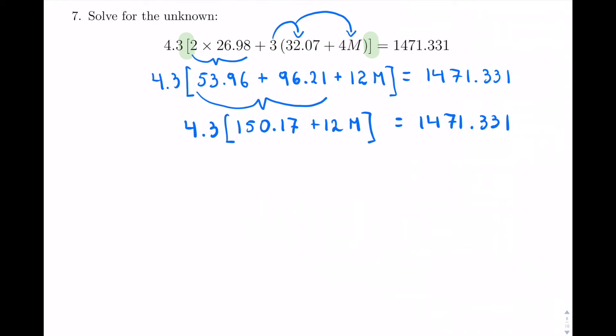Now I can take my factor and factor it in. So 4.3 times 150.17, so we have 645.731, plus then 4.3 times 12.